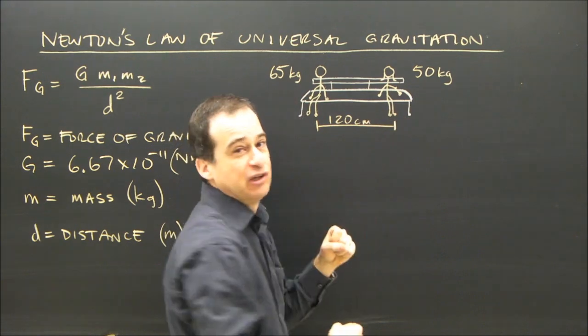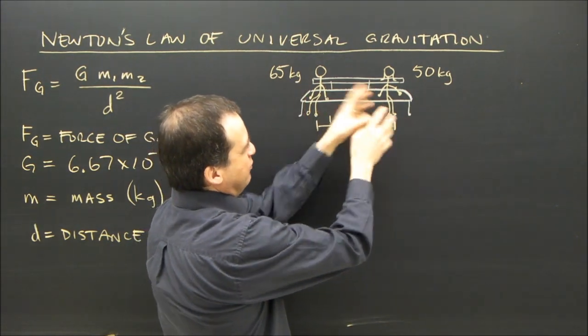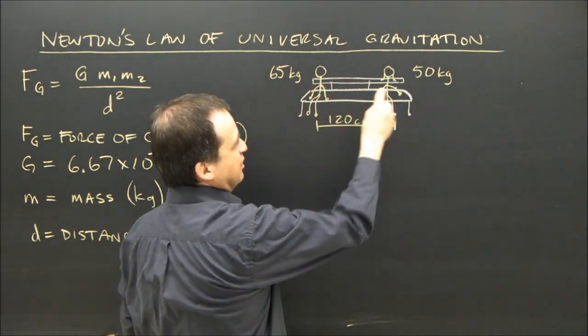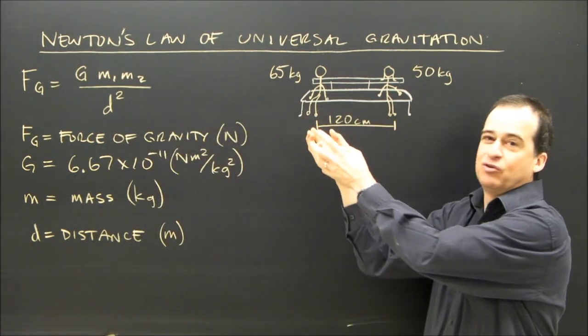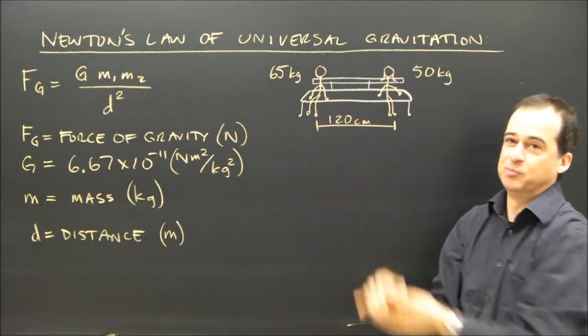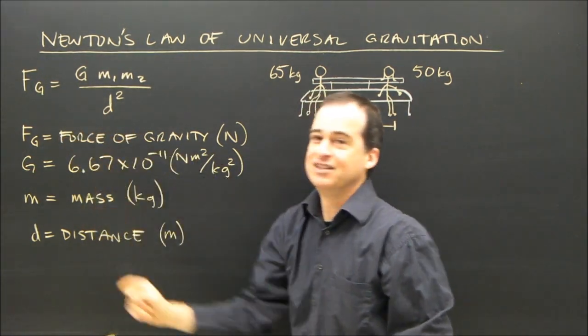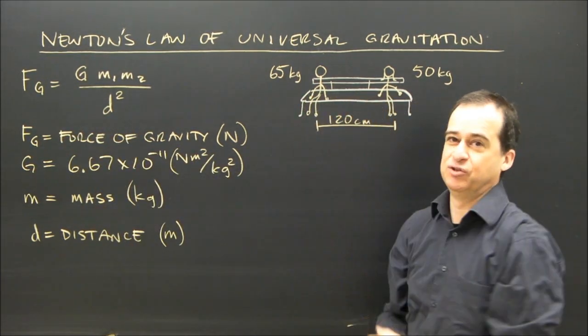And because of Newton's third law, if the gravity of the boy, if you calculate it, that's the gravity that the boy is pulling on the girl, which because of Newton's third law is equal and opposite to the amount of gravity that the girl is pulling on the boy. So you calculate this, this is the force between the two.